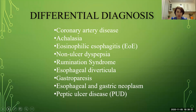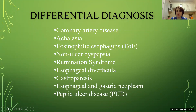Differential diagnosis for GERD includes coronary artery disease, achalasia, eosinophilic esophagitis, non-ulcer dyspepsia, esophageal diverticula, gastroparesis, peptic ulcer disease, and esophageal or gastric neoplasm. All these disorders have symptoms similar to GERD such as dysphagia, achalasia, regurgitation, heartburn, or pain behind the sternum.